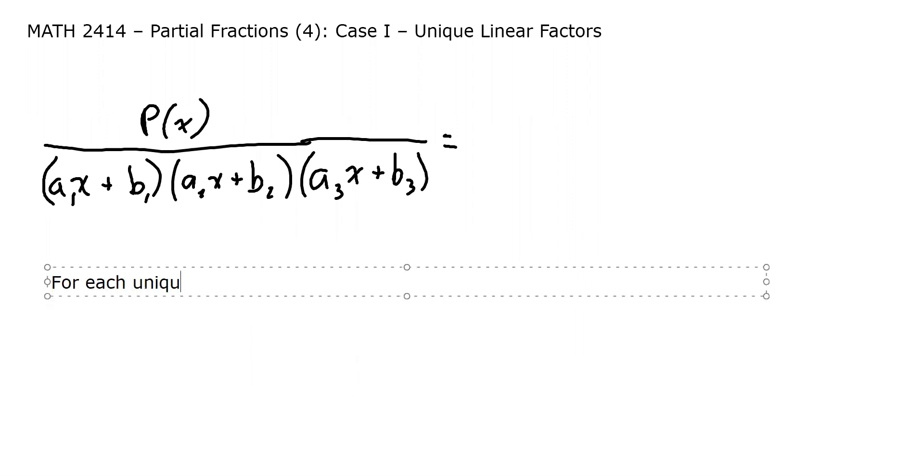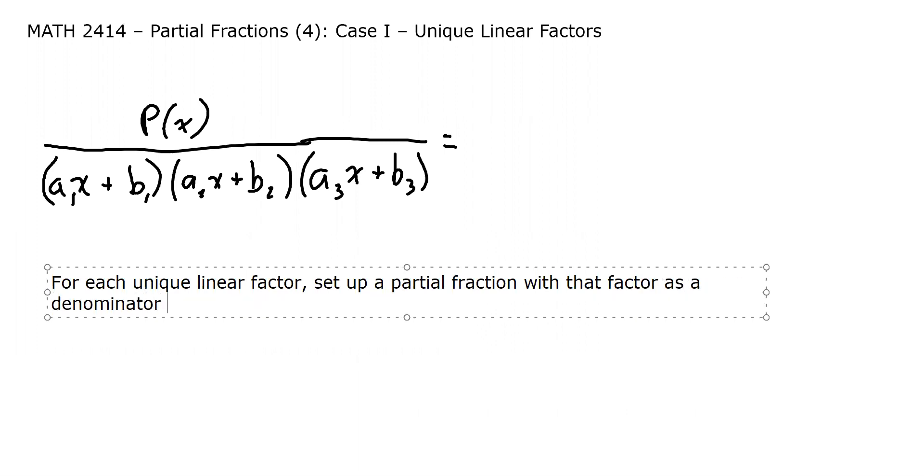I think this is worth typing in. For each unique linear factor, set up a partial fraction with that factor as a denominator and an unknown constant numerator.